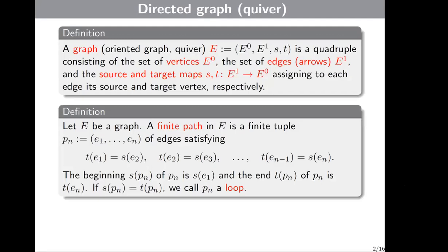A finite path P_n in some graph E is a finite tuple of edges. We write P_n = (e_1, ..., e_n), where e_1 is the first edge and e_n the last. These edges must satisfy the condition that the target of each edge equals the source of the next edge, and so on up to e_n.